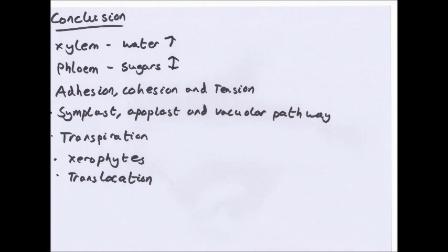In conclusion: xylem transports water up the plant; phloem transports sugars up and down. Water transport relies on adhesion — attraction to cell walls — cohesion — attraction between molecules — and tension. From root to xylem there are three pathways: symplast (through cytoplasm), apoplast (through cell walls), and vacuolar (through cytoplasm and vacuoles). The movement and evaporation of water from the aerial parts of the plant is transpiration. Xerophytes are adapted to survive in areas with little water by reducing the rate of transpiration. Translocation is the movement of sugars. Thank you for watching — if there are any questions, please ask.